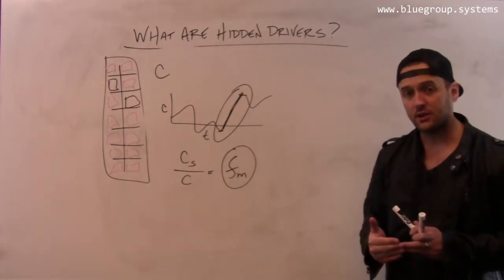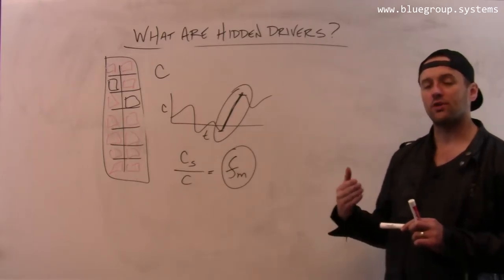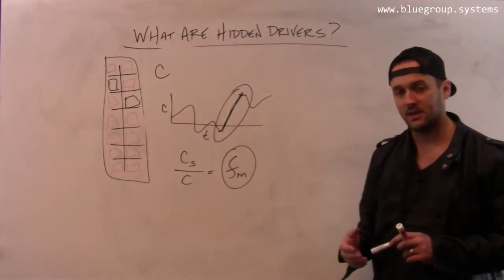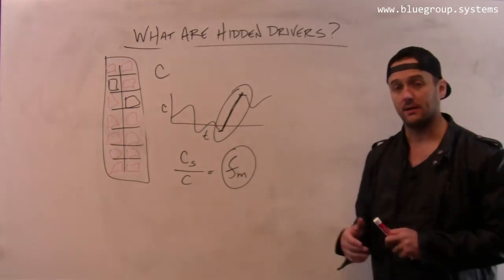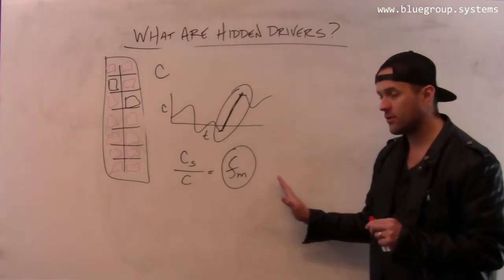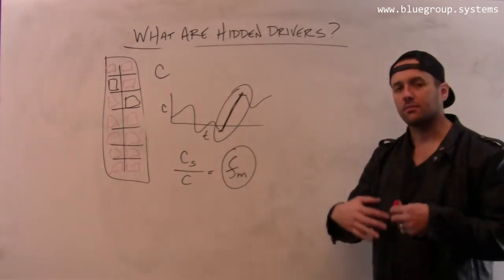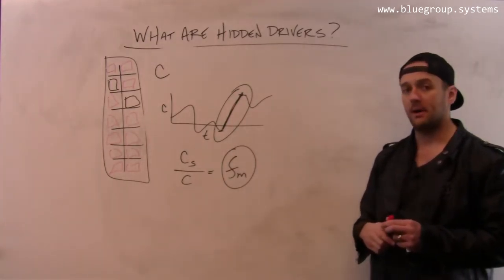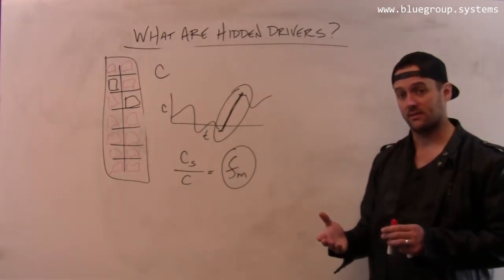As the monitored fraction goes towards one, I'm monitoring more drivers and I have to do less modeling to get the lot estimates to be accurate. And there's less uncertainty in the system. As the monitored fraction goes towards zero, there's more uncertainty in the system caused by all these hidden drivers. And my estimates of the lot are less accurate.